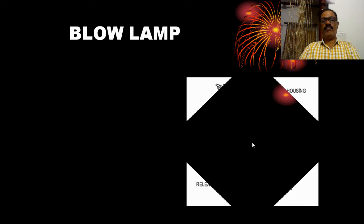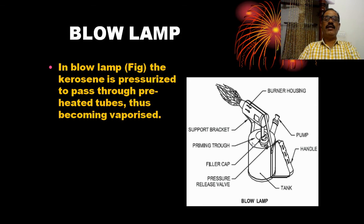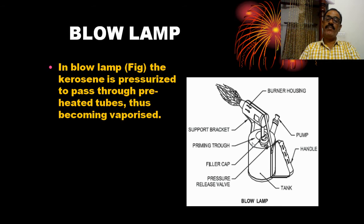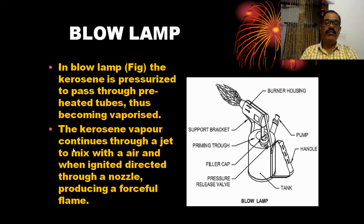Now let us come to the blow lamp. This is a blow lamp. In this figure, it is a blow lamp. The fuel used for the flame of the blow lamp is kerosene. The kerosene is pressurized to pass through pre-heated tubes, thus becoming a vapour. The kerosene vapour continues through a jet to mix with air, and when ignited, it is directed through a nozzle, producing a forceful flame.